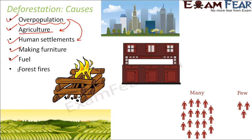Forest fires are another cause of deforestation. These are not always caused by human beings — they can occur naturally due to extreme hot summers or extremely cold winters. However, one forest fire can destroy an entire forest at once, and thousands of trees are lost every year due to forest fires. Sometimes it also happens as a result of human activity: instead of cutting down trees, people deliberately set the entire forest on fire, completely destroying it.